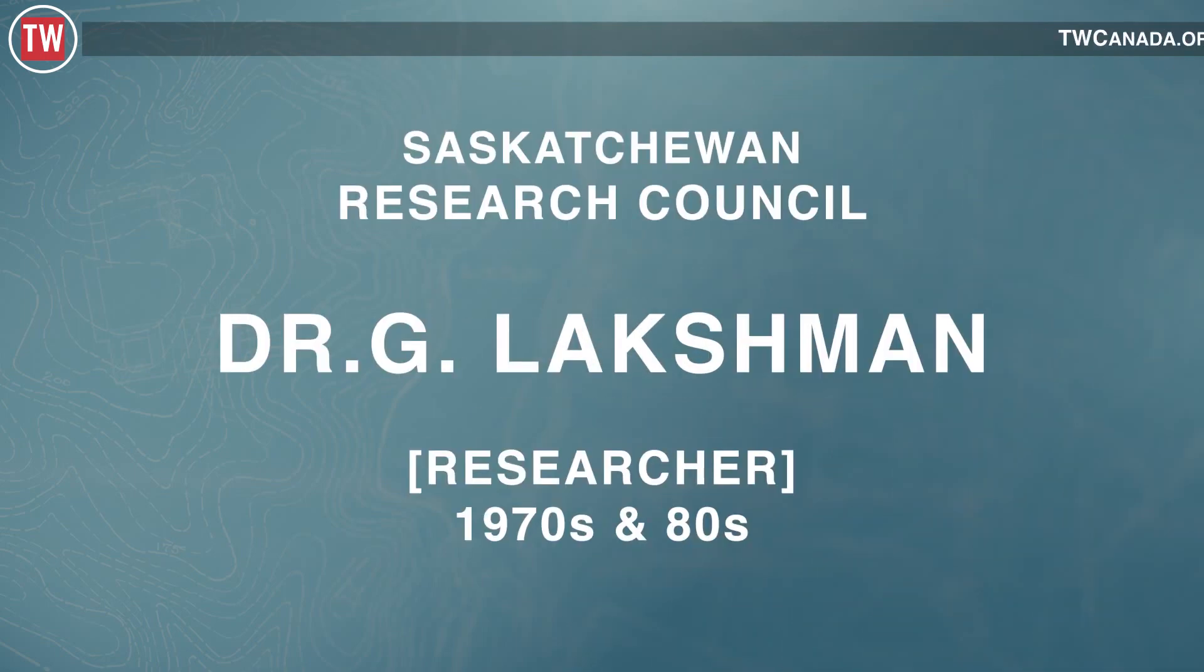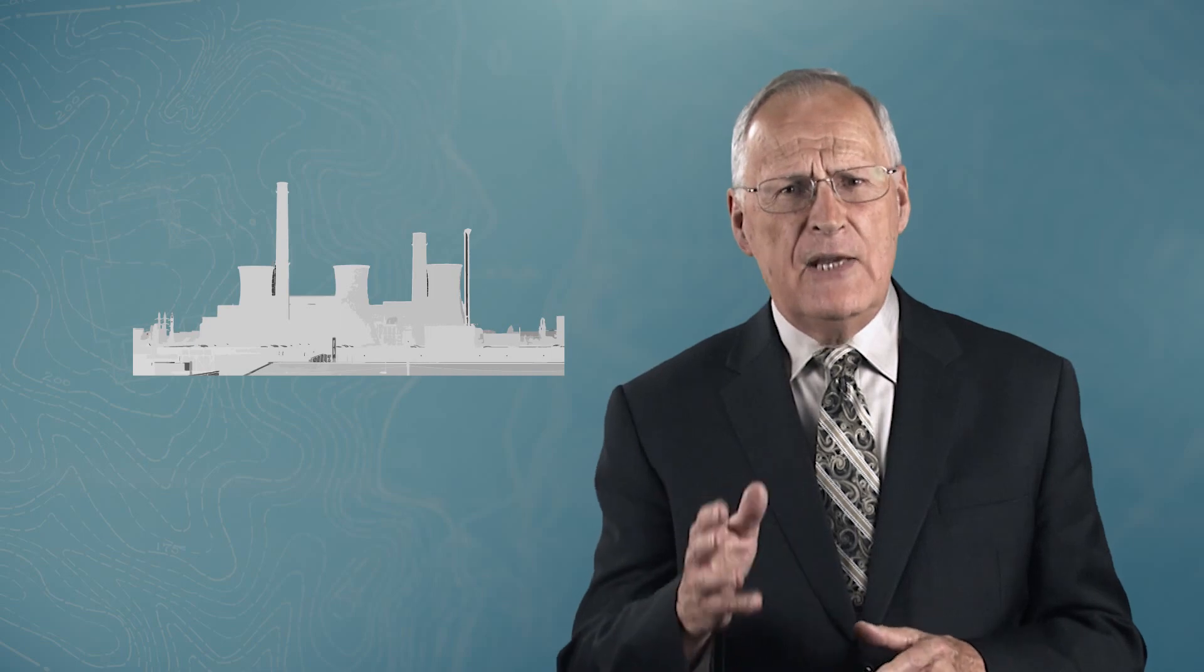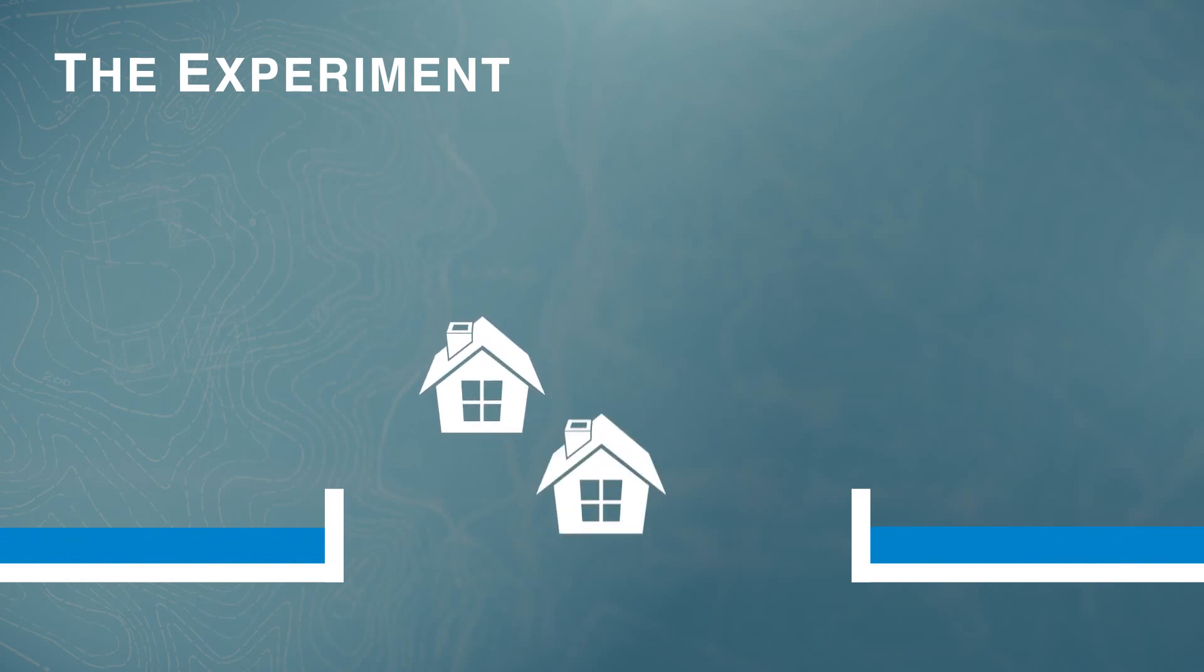Dr. G. Lakshman, a researcher at Saskatchewan Research Council in the 1970s and 80s, was acutely aware of the problem. Humboldt needed a new treatment plant that it could not afford. Lakshman was given permission to develop two very small, very shallow lagoons outside the community.